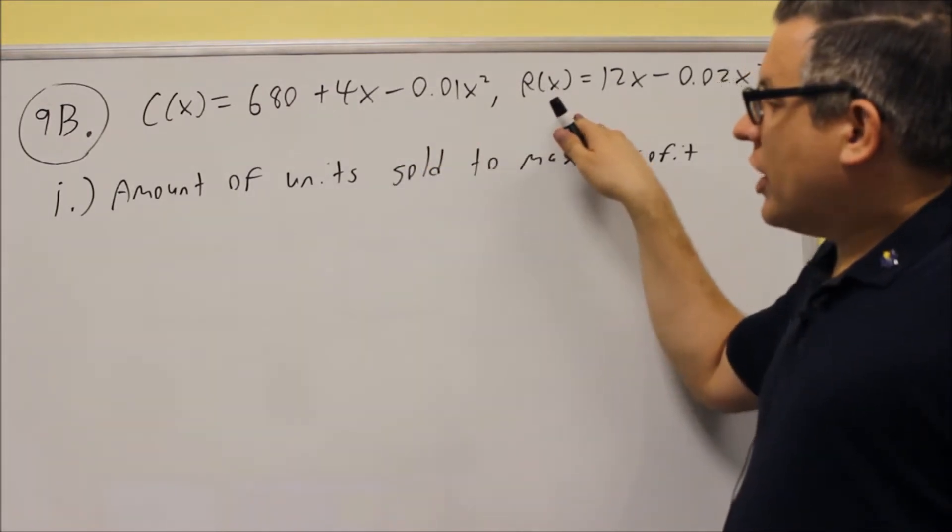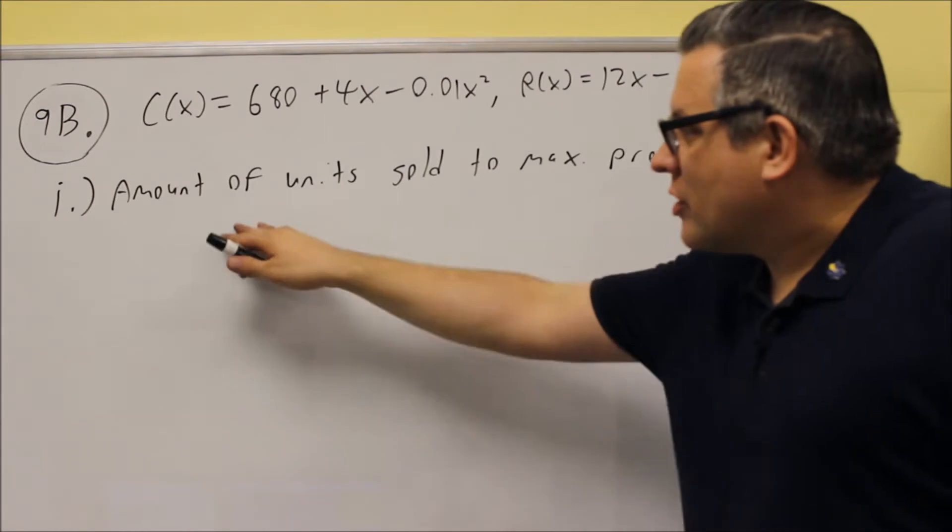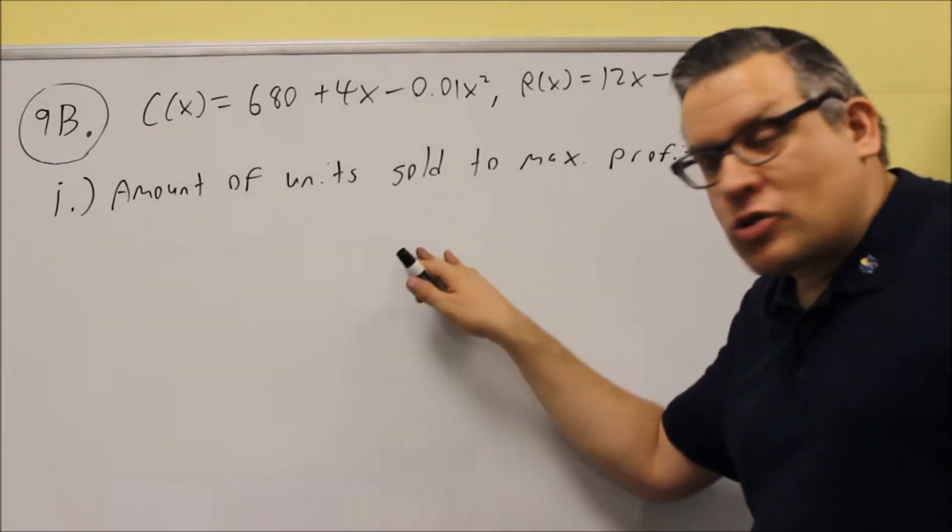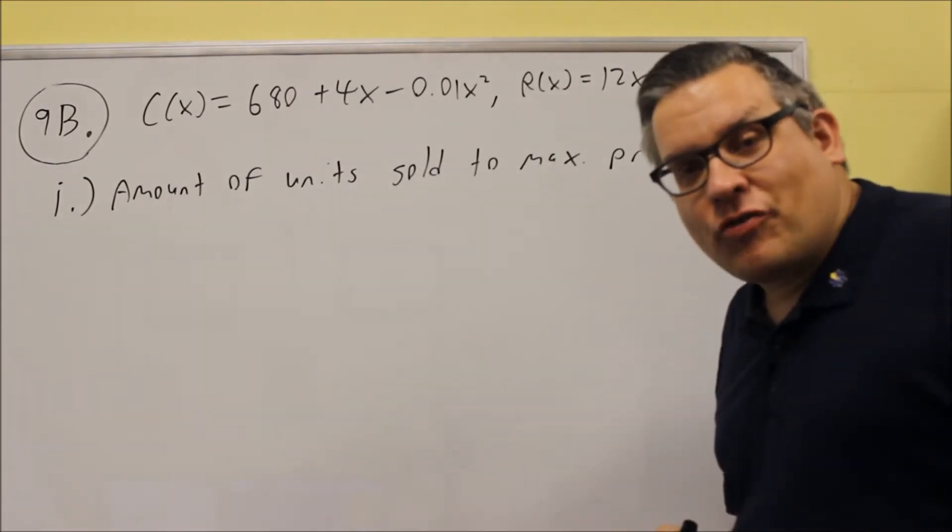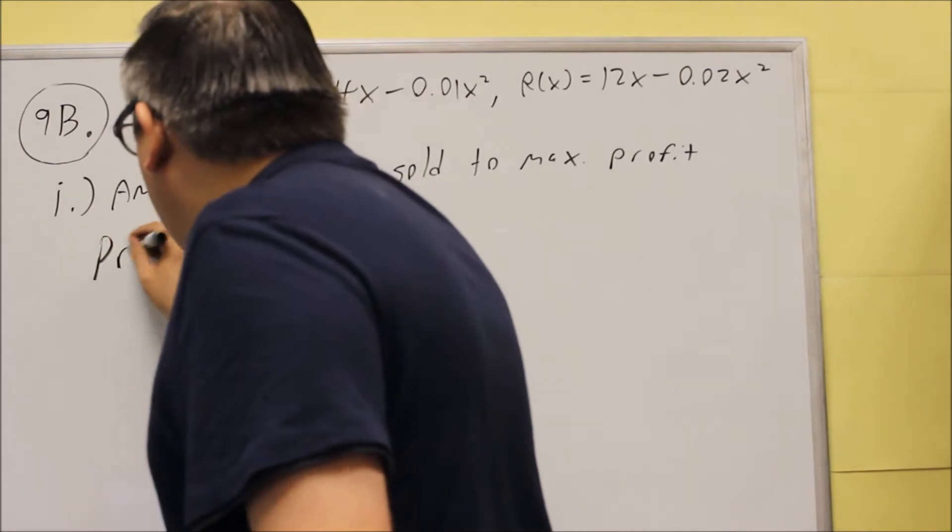So this one we have, we're given a cost function and a revenue function. They want us to find the amount of units that are sold in order to maximize the profit. So in order to do this, we have to first find the profit function. In order to do this, you want to make sure that you know this relationship: